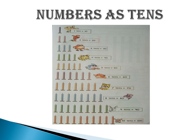Numbers as tens. A group of 10 objects is equal to 1 ten. So 1 ten is equal to 10, 2 tens is equal to 20, 3 tens is equal to 30, 4 tens is equal to 40, 5 tens is equal to 50, 6 tens is equal to 60, 7 tens is equal to 70, 8 tens is equal to 80, 9 tens is equal to 90, 10 tens is equal to 100 children.